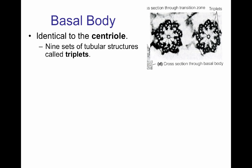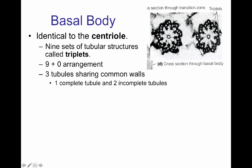The basal body is the beginning of the flagella or cilia. It's identical to a centriole and has nine sets of tubular microtubule structures called triplets. They're called triplets because they're composed of three independent microtubules attached to one another: an A, a B, and a C microtubule. Having nine structures around the center with none in the center makes this a nine-plus-zero arrangement.